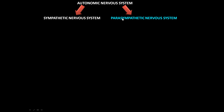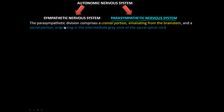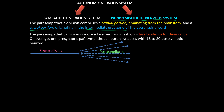In this last video, we're going to discuss the parasympathetic nervous system of the autonomic nervous system. This is the last video on the autonomic nervous system. The parasympathetic nervous system comprises a cranial portion emanating from the brainstem and the sacral portion that originates from the intermediate gray zone of the sacral spinal cord. The parasympathetic division is more localized in its firing fashion than the sympathetic nervous system.